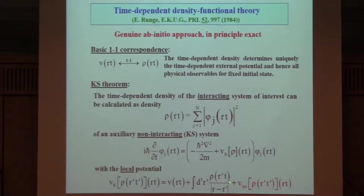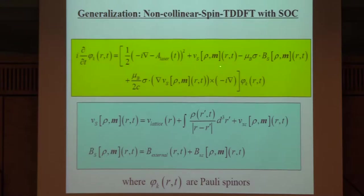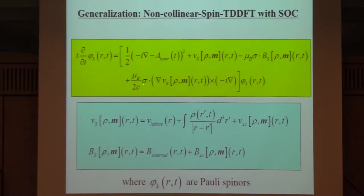This is an approach that is in principle exact. Although this looks like a mean field equation, the density you get is the true one—the one you would get from a fully correlated wave function—provided you use the right exchange-correlation potential as a functional of the density. What we use in practice for the spin-dependent calculation is a generalization to non-collinear situations, including spin-orbit coupling. Here you see a purely time-dependent vector potential describing the laser field, the Kohn-Sham potential, a Zeeman term involving an external magnetic field, the exchange forces, and a time-dependent spin-orbit coupling term.